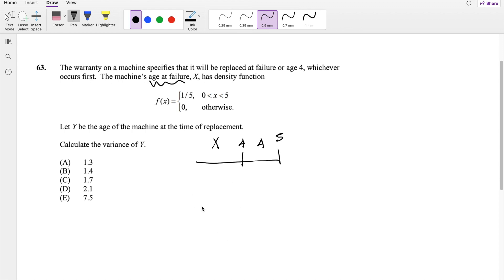And as always, variance formula: variance of y is equal to the expected value, the second moment, minus the first moment squared.